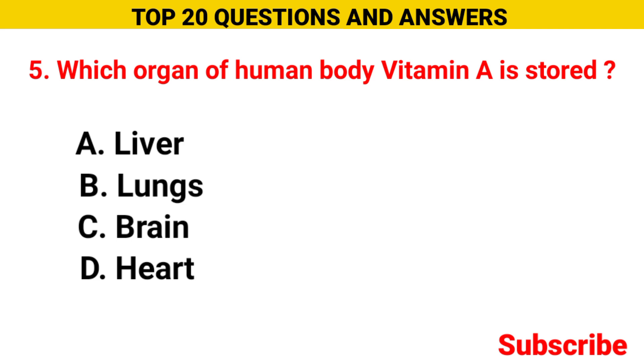Which organ of the human body is vitamin A stored in? Option A liver, option B lungs, option C brain, option D heart. The correct option is option A, liver.